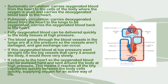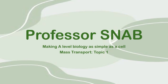The oxygenated blood returns to the heart so it can be pumped hard around the body at high pressure. This means it reaches all the tiny capillaries between the body cells quickly, supplying oxygen for an active way of life. These separate circulatory systems ensure that oxygenated and deoxygenated blood cannot mix, so tissues receive as much oxygen as possible. Whatever circulatory system an organism has, the main function is to ensure all tissues receive as much oxygen as possible, with adaptations suited to their needs.